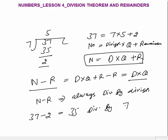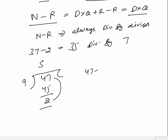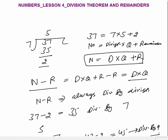Another example: 47 divided by 9. 9 times 5 is 45, the remainder is 2. Now number minus remainder: 47 minus 2 is 45. This is divisible by divisor 9. So the very important concept in basic Division Theorem is: number minus remainder is always divisible by divisor, and number is always equal to divisor into quotient plus remainder.